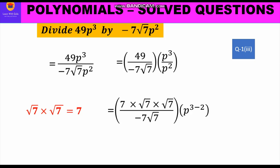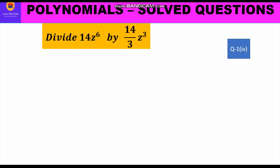Now 49 can be written as 7 into 7, and 7 can further be broken into √7 into √7, so we write 7 into √7 into √7 in the numerator and -7√7 in the denominator. For the variable part, we apply the laws of exponents: p raised to power 3 minus 2. The 7s cancel, the √7s also cancel, and we are left with -√7 p as the final answer.